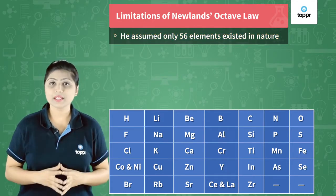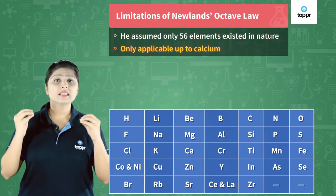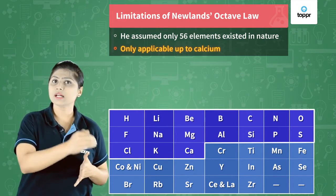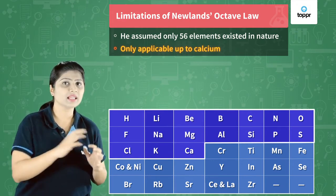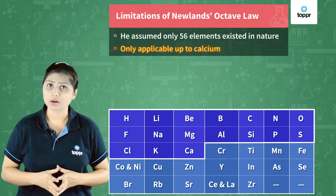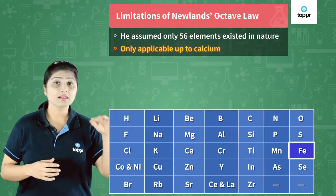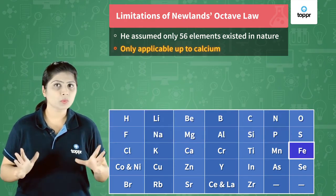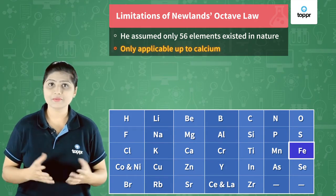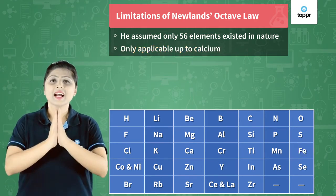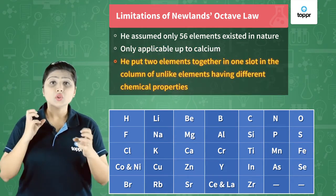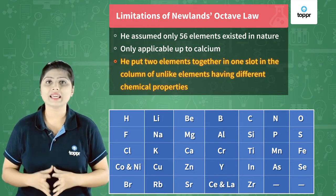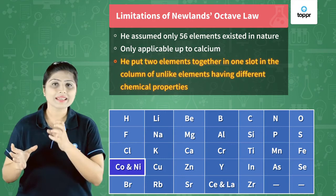The next limitation is that this rule was only applicable till calcium. As you move ahead and check the other elements, they did not follow Newland's Octave Law. For example, iron is placed below sulphur, but iron does not show properties like sulphur.